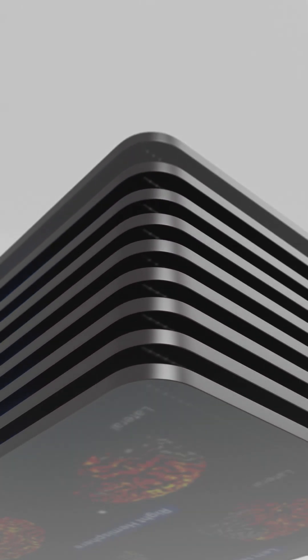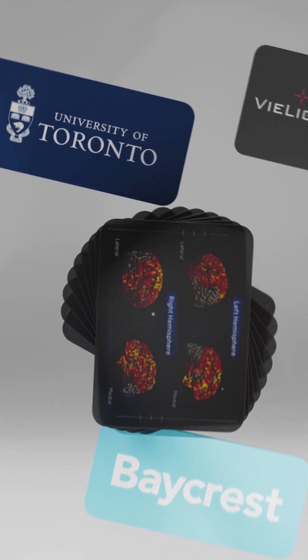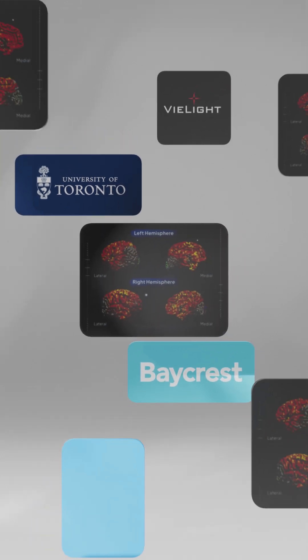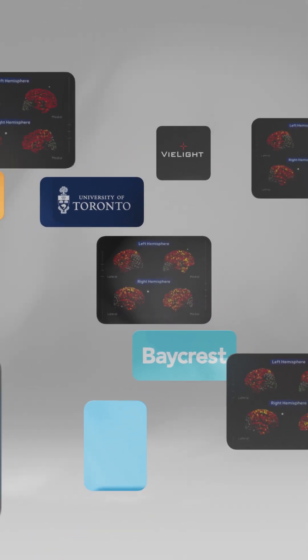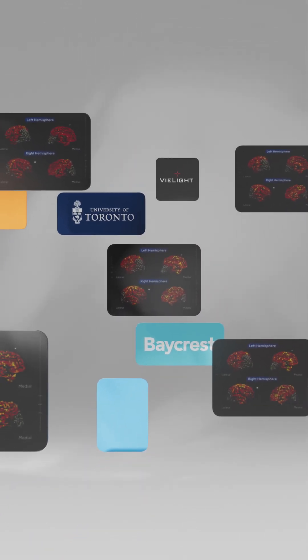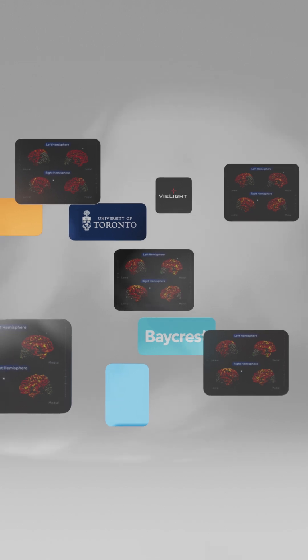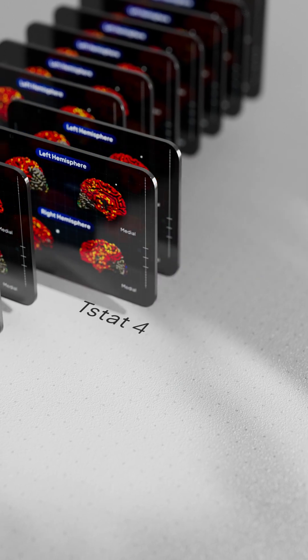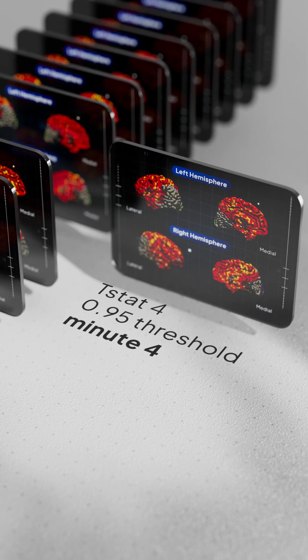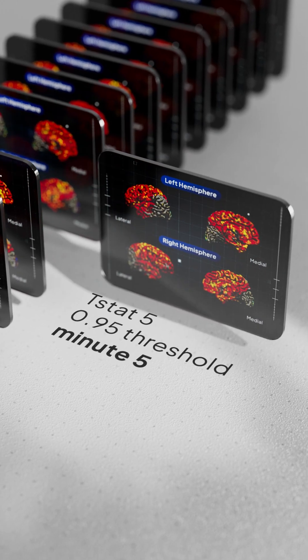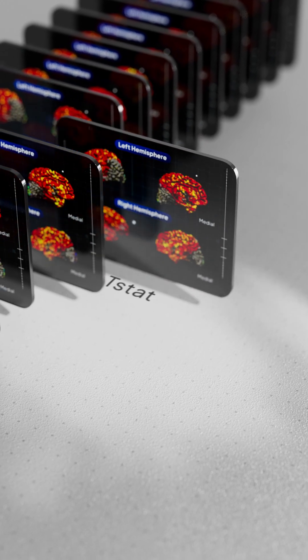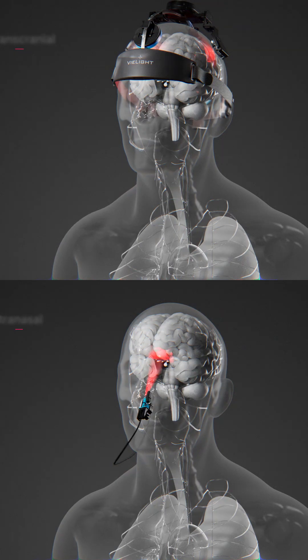This real-time fMRI scan from a joint study by Baycrest Health Sciences and the University of Toronto shows what happens when 810 nanometer infrared light is delivered intranasally with V Light technology. In just three to six minutes, the entire brain responds positively across both hemispheres, lateral and medial regions, showing a rapid global response.